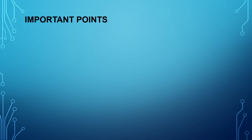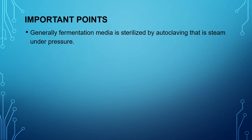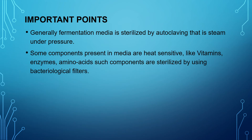Here are some important points related to sterilization of fermentation media. Generally, fermentation media is sterilized by autoclaving, that is steam under pressure. But in some cases, some components present in the media are heat sensitive. Heat sensitive means whenever these components are exposed to heat, their structure gets destroyed. So in case of such components — like vitamins, enzymes, amino acids — these components are sterilized by using bacteriological filters.